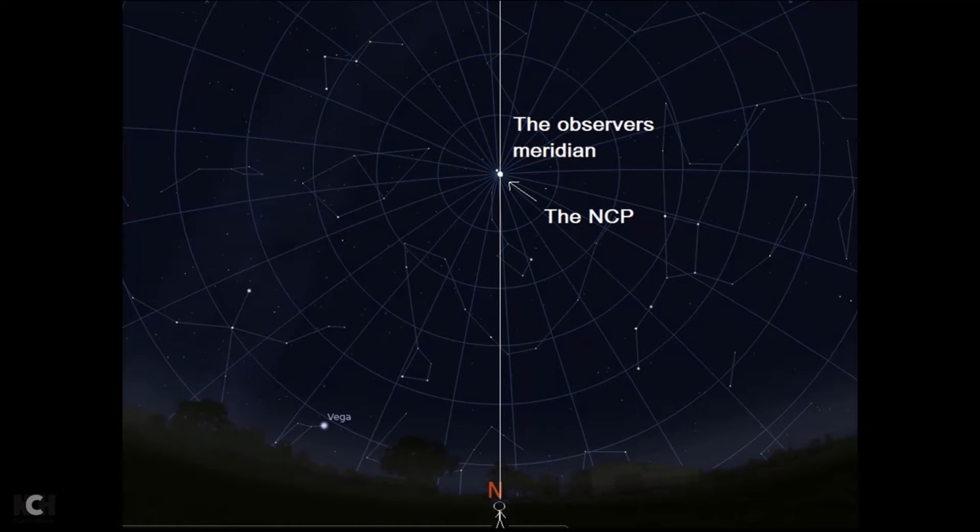So the observer's meridian - here's our little observer. If our little observer faces north and you draw an imaginary line going through the northern celestial pole, this is the observer's meridian. Obviously as the sky rotates, the meridian stays in the same place, but all of the stars, the position of the stars relative to the meridian, will be constantly changing.